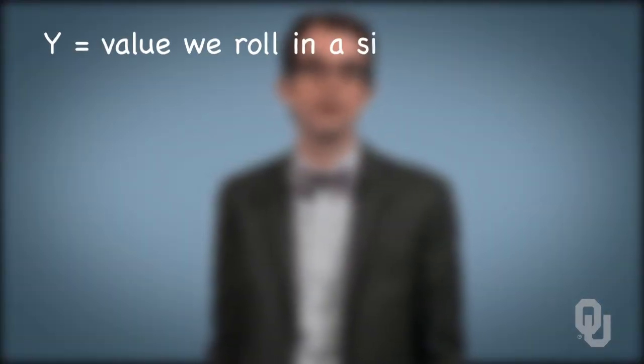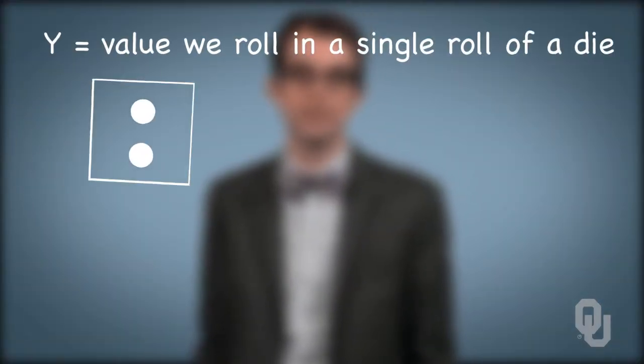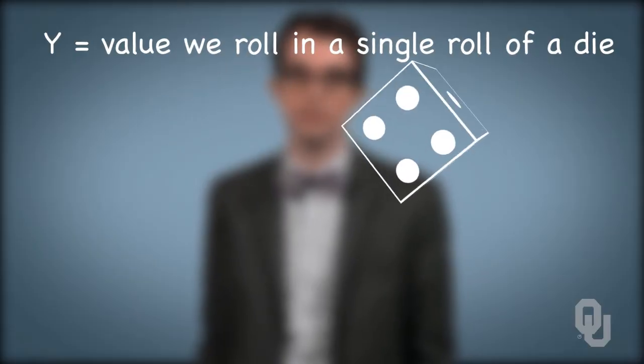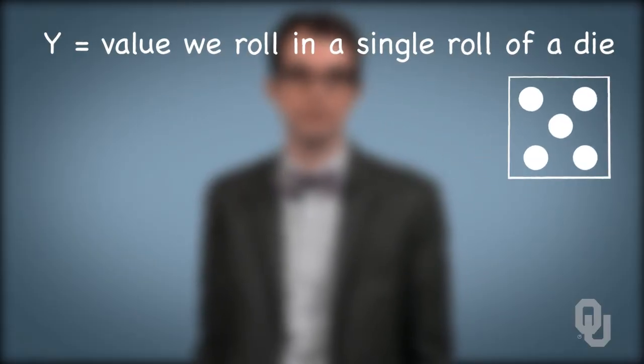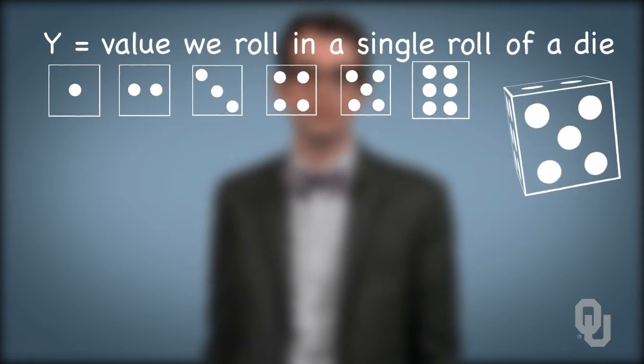An easy example of a random variable that follows a uniform distribution would be random variable y defined as the value that we roll in a single roll of a die. There are six possibilities for the outcome of a single roll of a die: one, two, three, four, five, or six.